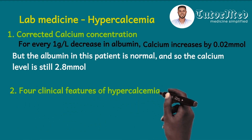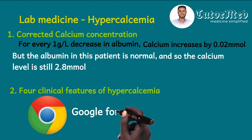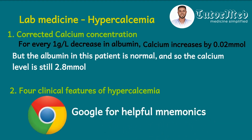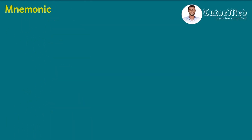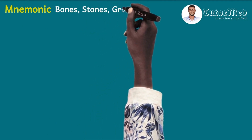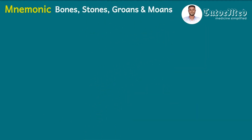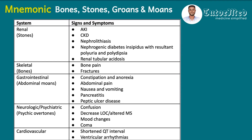For question two — four clinical features of hypercalcemia — go to your textbook, find the answers, then Google for helpful mnemonics. The mnemonic for hypercalcemia is: Bones, Stones, Groans, and Moans. Bones for skeletal manifestations, Stones for renal manifestations, Groans for neuropsychiatric manifestations, and Moans — abdominal moans — for gastrointestinal manifestations.